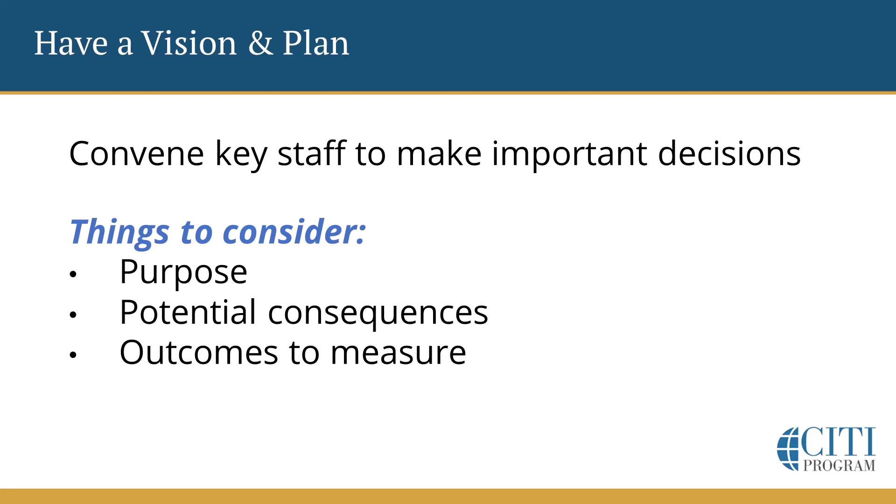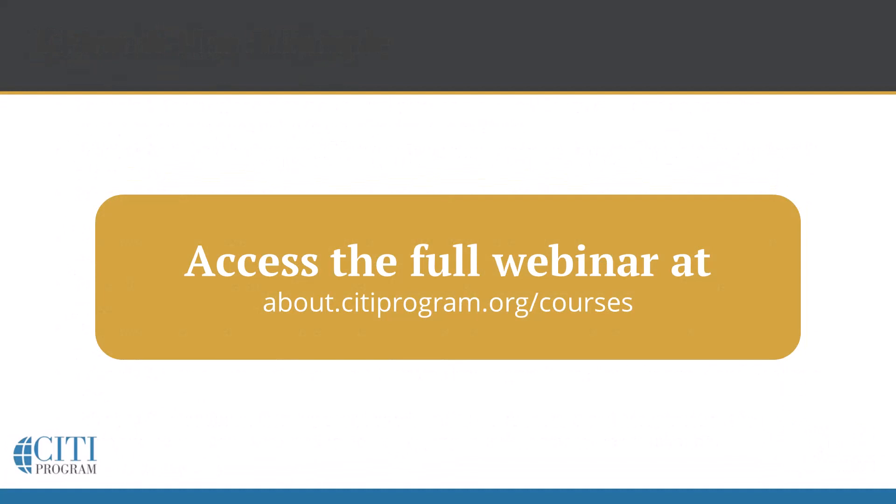Then you want to consider three things from the output: the purpose — why you're wanting to implement predictive analytics and what it is you want to achieve; the consequences — so what are some of the intended and unintended consequences, what could negative outcomes be; and then what does success look like, what does failure look like, and what do you want the results to look like immediately, the first year, second year — so have some guideposts for what success looks like.